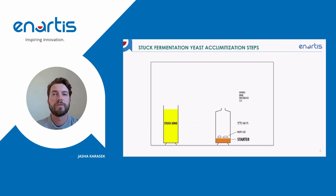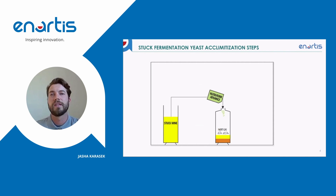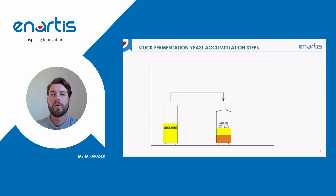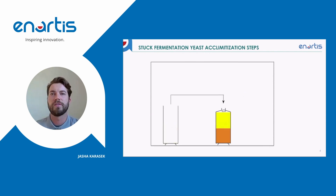That starter will ferment, and once its fermentation has decreased its initial Brix level by half, that's when we add a little more stuck wine — generally the same volume as our starter — plus a little nutrient containing DAP, such as NutriFirm Advance, to keep the fermentation going. We let that mixture ferment for another half Brix decrease, then add an equal volume of stuck wine to that batch, let it decrease by another half Brix, and then the full volume goes into the tank.